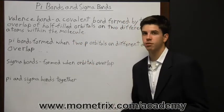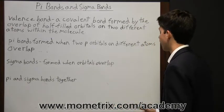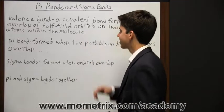And so we're looking at pi bonds and sigma bonds, which we both know are valence bonds, which means that they are covalent bonds formed by the overlap of half-filled orbitals on two different atoms, but still within the same molecule.